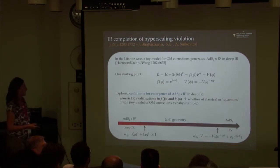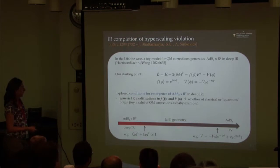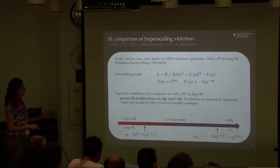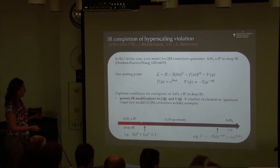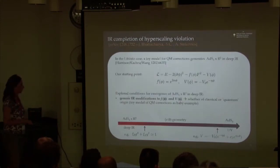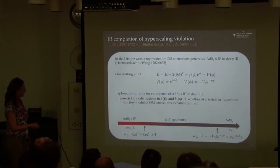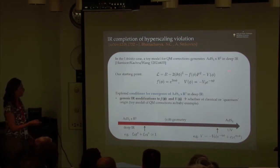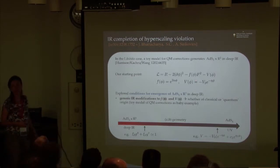We used this as motivation to ask the same question: in what sense are these intermediate scaling solutions, and we explored conditions where an AdS2 factor emerges in the IR, whether from quantum corrections or classical corrections. We simply asked, what happens if you start from a more general action with a general coupling and potential - what are the conditions that guarantee you get AdS2 times a plane in the deep infrared?